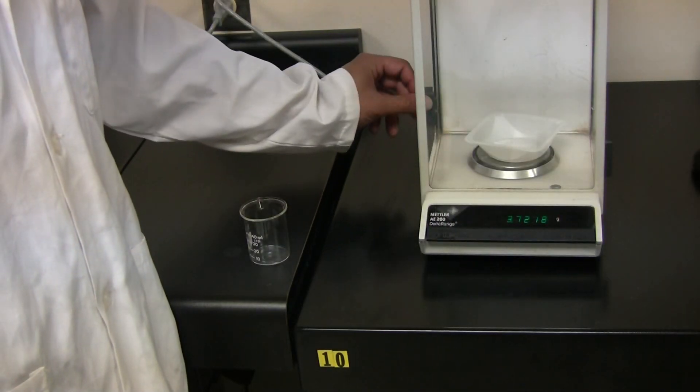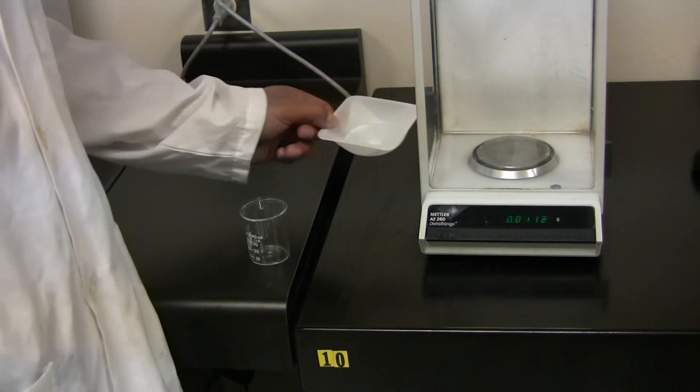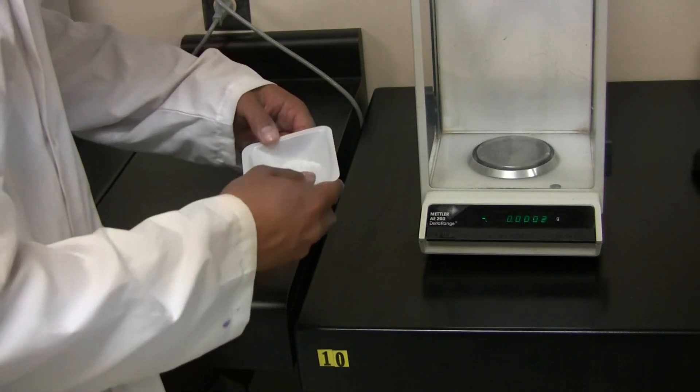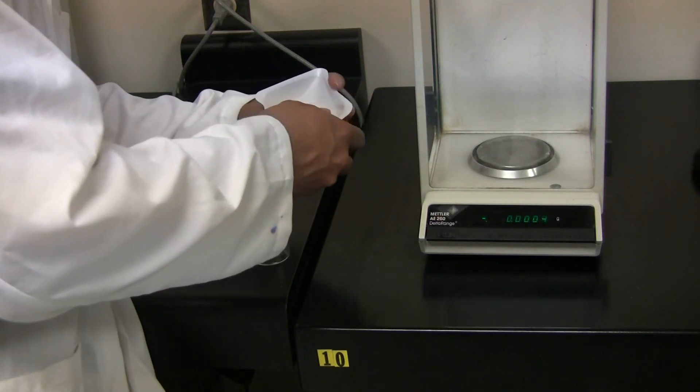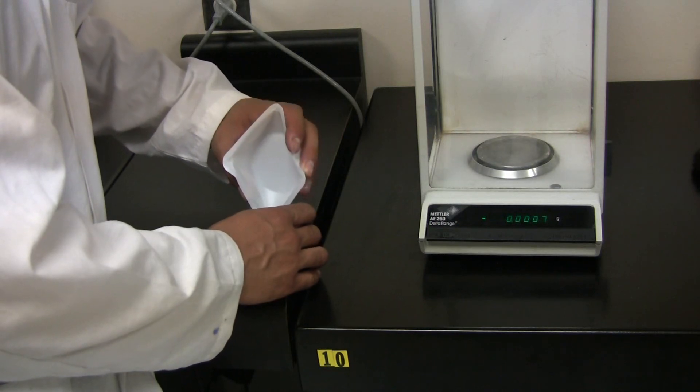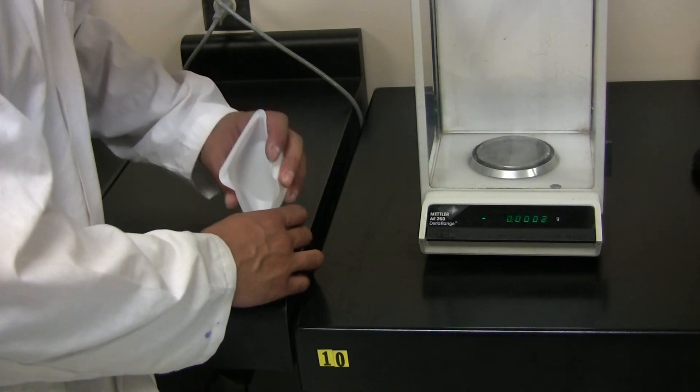Once finished, you need to remove the weigh boat from the analytical balance and pour this directly into your reaction flask. Make sure to get out as much as possible.